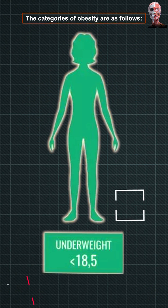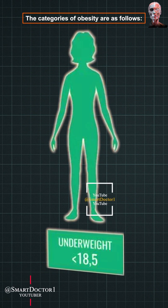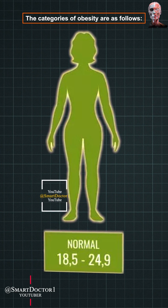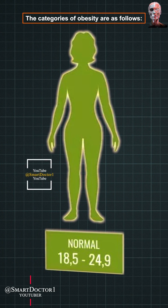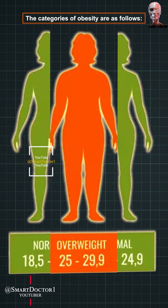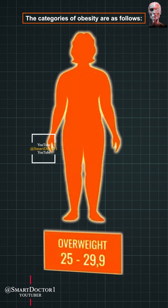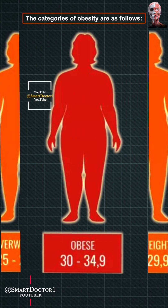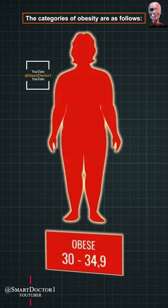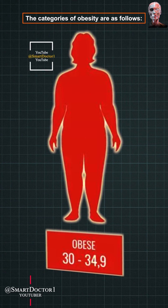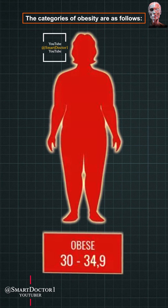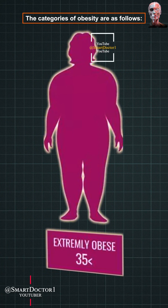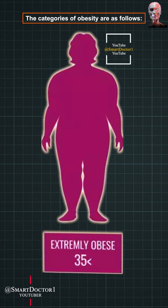Underweight: BMI below 18.5. Normal weight: BMI between 18.5 and 24.9. Overweight: BMI between 25 and 29.9. Obesity: BMI between 30 and 34.9. Extreme obesity: BMI of 35 or higher.